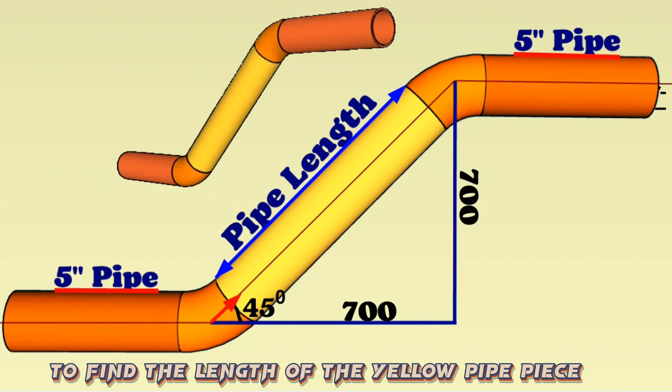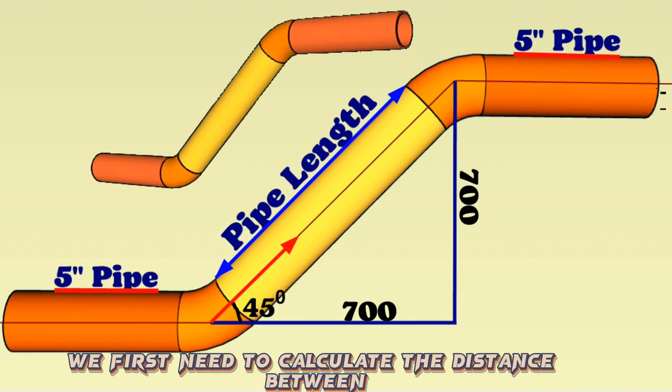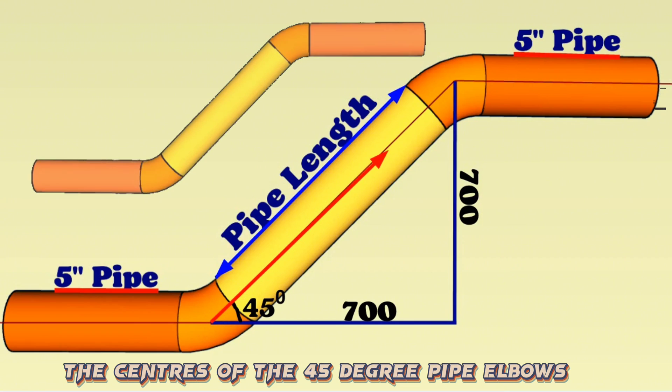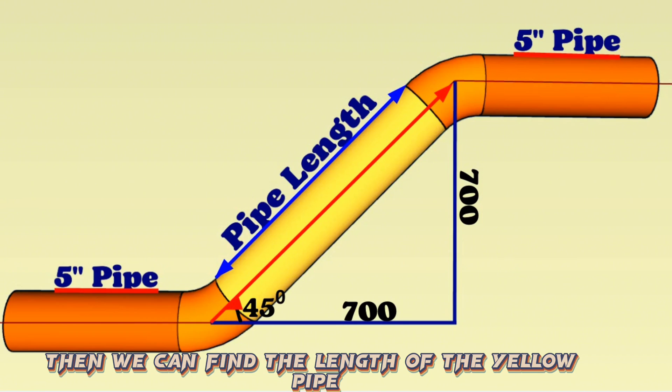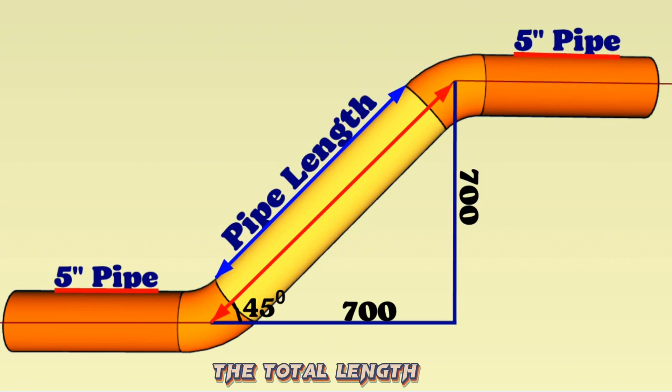To find the length of the yellow pipe piece, we first need to calculate the distance between the centers of the 45-degree pipe elbows, then we can find the length of the yellow pipe by subtracting the lengths of these two elbows from the total length.